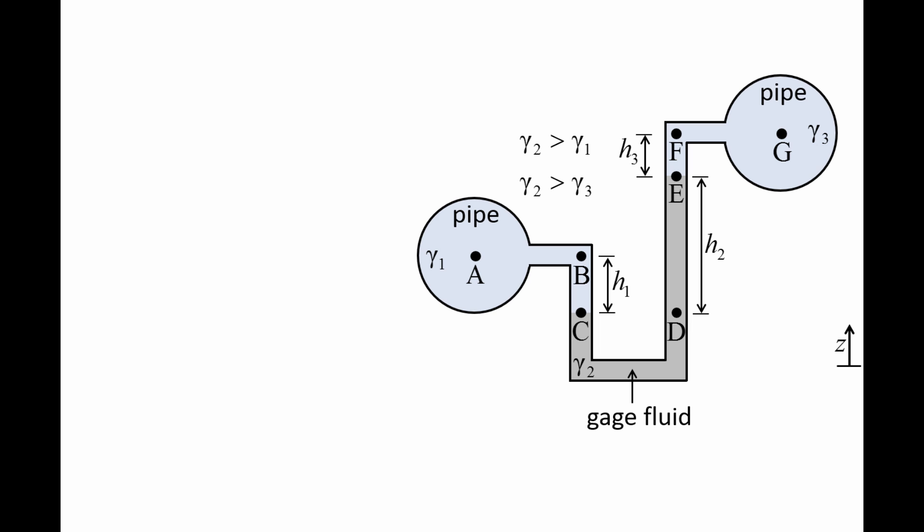Point E now corresponds to the interface between the gauge fluid and the fluid in the pipe, which has a specific weight of gamma 3. For this particular setup, the specific weight of the gauge fluid, gamma 2, needs to be greater than gamma 1 and gamma 3. Point G corresponds to the point in the center of the pipe, and point F is at the same elevation as point G. The vertical distance between points E and F is H3.